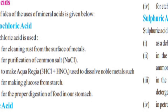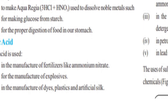Next is Nitric Acid, with formula HNO3. Use number one: it is used in the manufacture of fertilizers like Ammonium Nitrate. Nitric acid is mostly used to make fertilizers. Fertilizers are used in crops — when we want to improve crop yield, we use fertilizers.